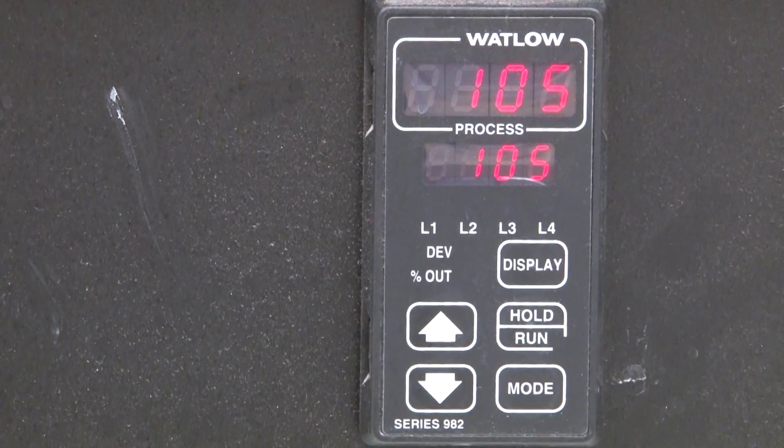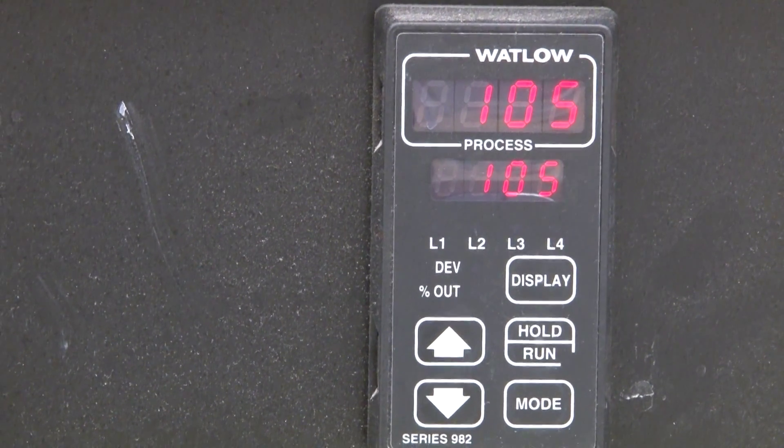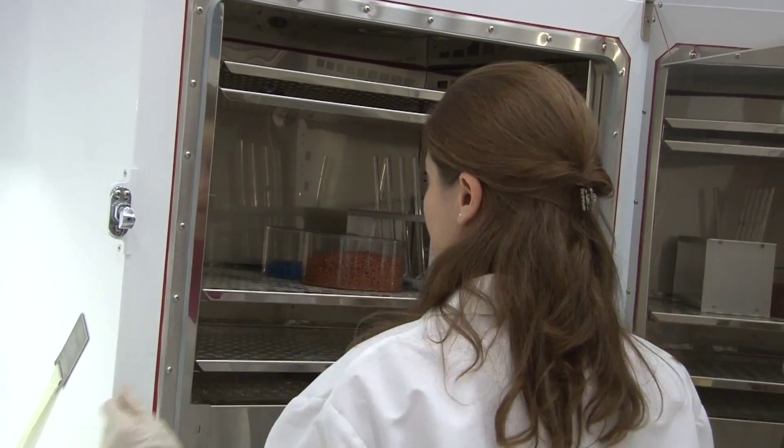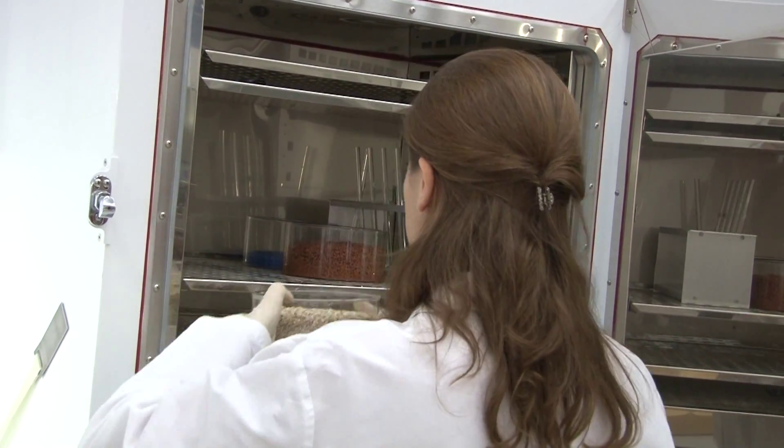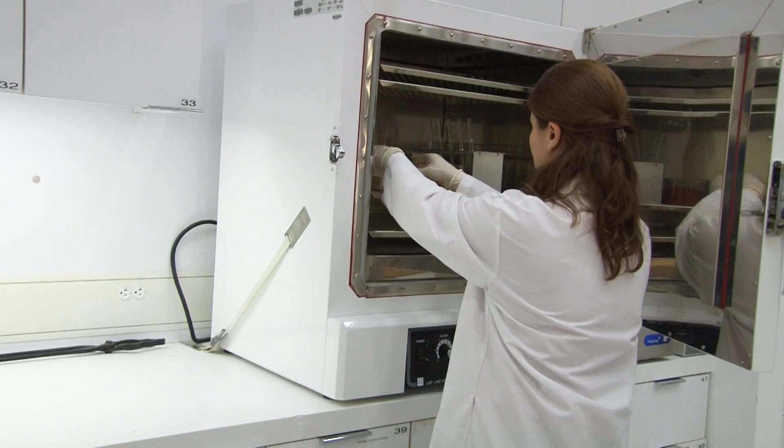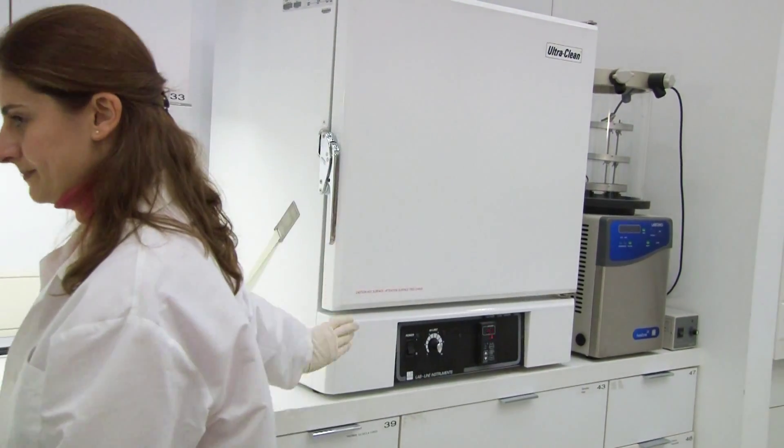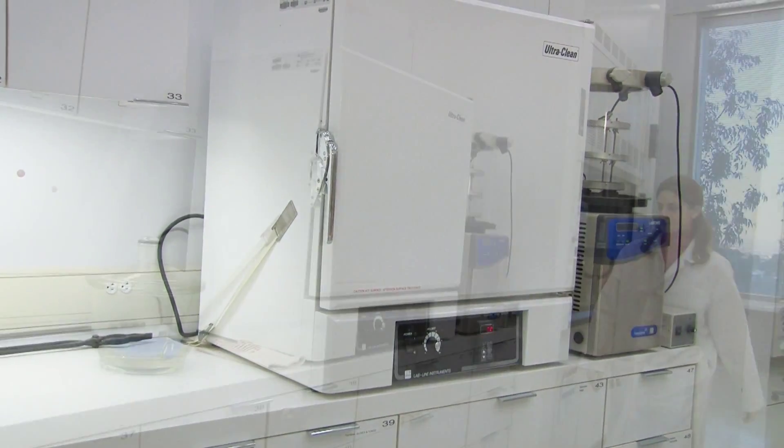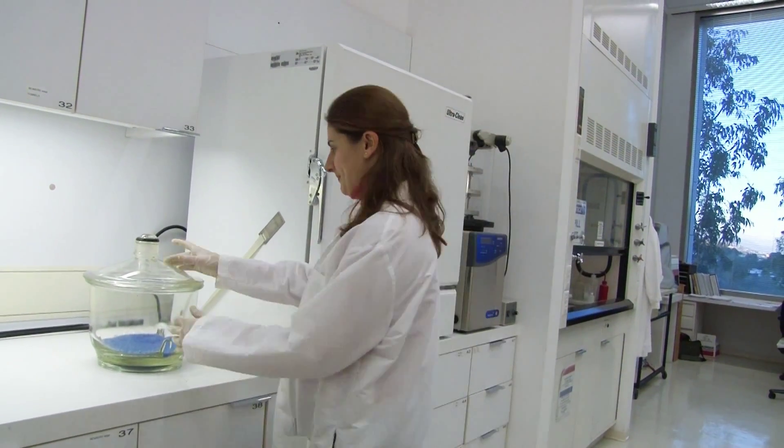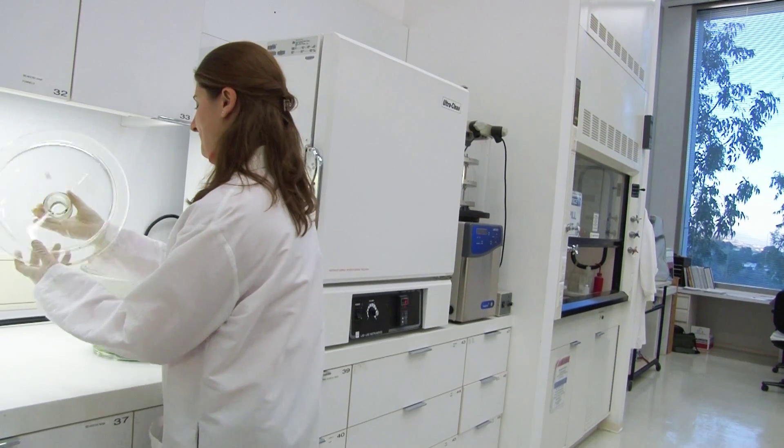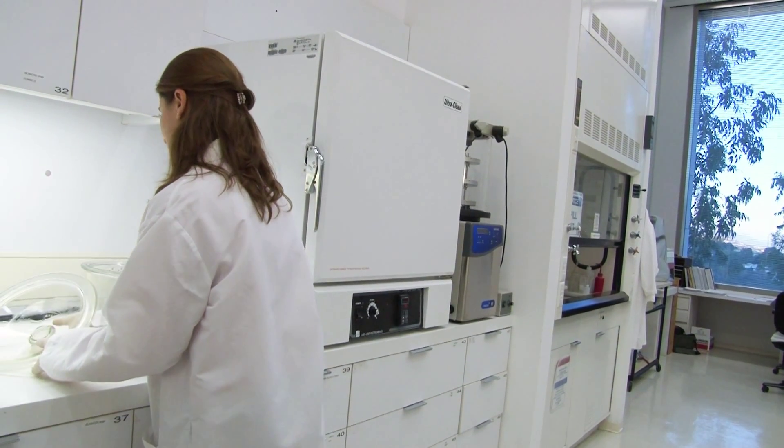Dry the granular material in an oven at 105 degrees Celsius for 20 hours. Afterwards, cool the materials to ambient temperature in a desiccator for 4 hours before weighing.